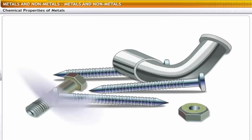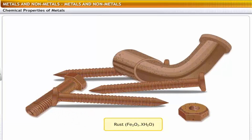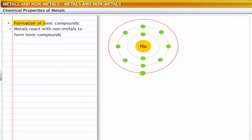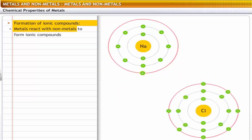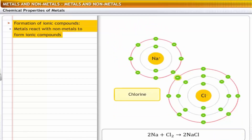Iron rusts because it reacts with moisture to form iron oxide, commonly known as rust. Metals react with other elements in a variety of ways. Formation of ionic compounds: metals lose electrons to non-metals to form strong ionic compounds. For example, sodium loses electrons to chlorine to form sodium chloride, which is an ionic compound.